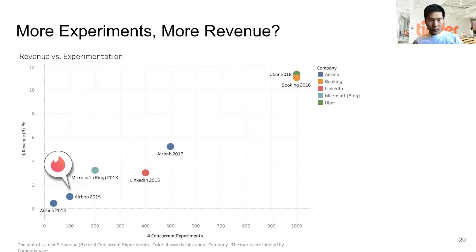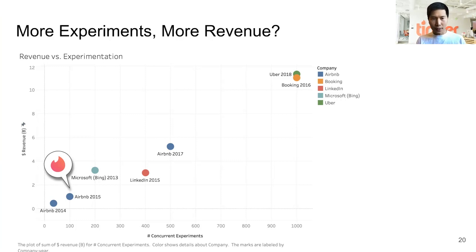I did a little analysis pulling together publicly available information about how many experiments companies are running concurrently and their yearly revenue. There's a nice correlation: the more experiments companies are conducting, the more revenue they tend to be generating. Tinder is in line with this correlation, and we hope to be growing up and to the right on both dimensions.